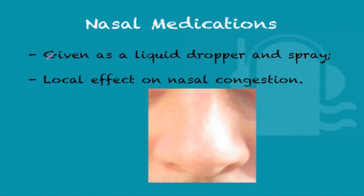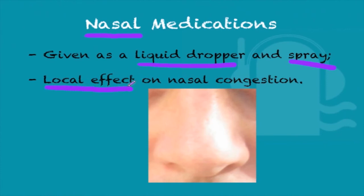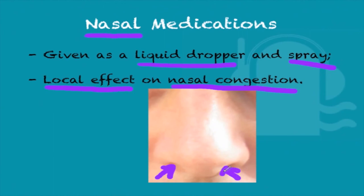Now onto nose and nasal medications. These are given in a liquid dropper or in a spray form. They have a local effect and are used to avoid systemic side effects on nasal congestion. Nasal congestion is when the mucosa of the nose and nasal cavity swells and becomes infected or irritated, making it harder to breathe. Usually you can get these medications over the counter, and you just insert them into the nostrils a couple of times a day to reduce mucosal swelling within a couple of days.